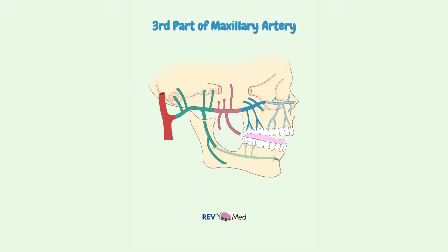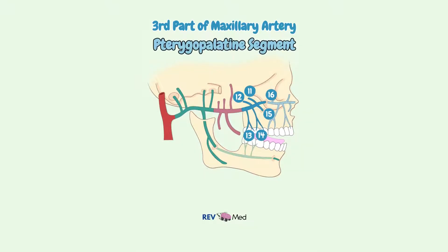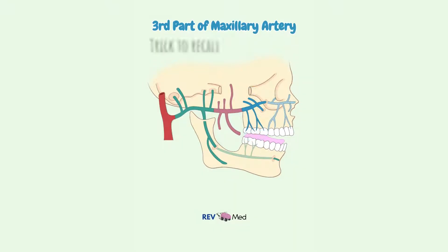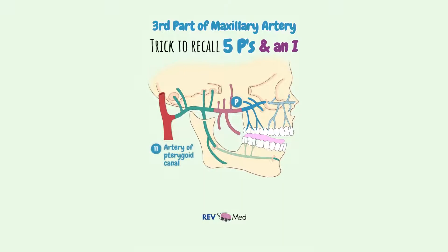Part three of the maxillary is the pterygoid palatine part, which has six branches. We'll call it the five P's and an I. The artery of the pterygoid canal goes to the pharynx and tympanic cavity.